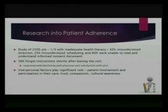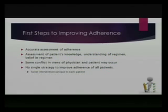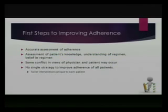Patient involvement, trust, compassion, and the cultural awareness of the physician and office staff all increase patient adherence. The first steps to improve adherence include an accurate assessment of whether the patient is compliant, knowing your patient's knowledge, understanding the regimen, and whether the patient believes in and understands it. As adults, there will always be a risk of conflict between your views and the patient's views — a healthy disagreement is fine as long as you find middle ground. There is no single strategy that improves adherence for all patients; you must tailor interventions uniquely to each patient.